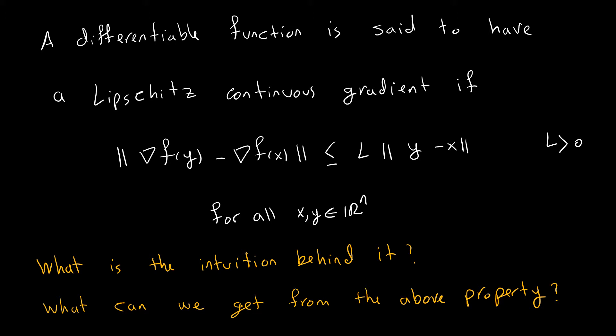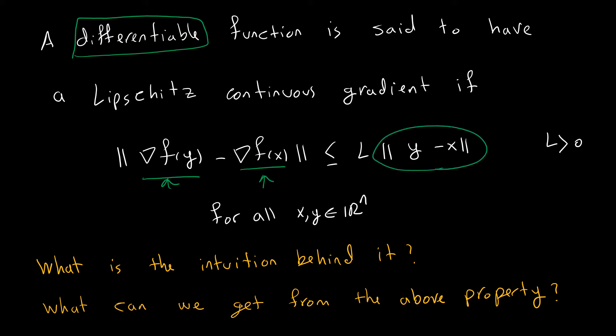As I explained, we need a differentiable function. Otherwise it doesn't work, because we're dealing with gradients and the function must be differentiable. For that differentiable function, the distance between two different gradients is bounded by the distance between two points, and this constant L is called the Lipschitz constant for the gradient.